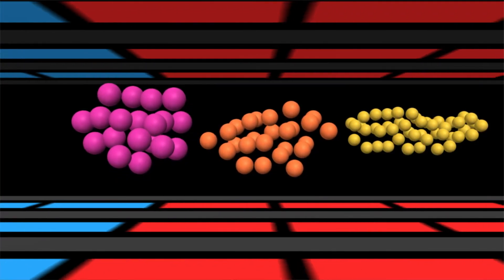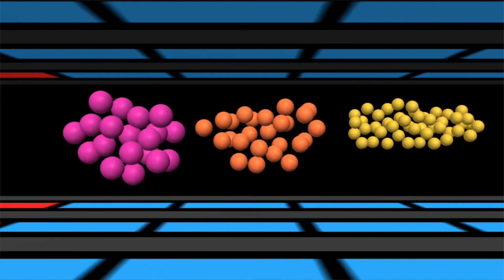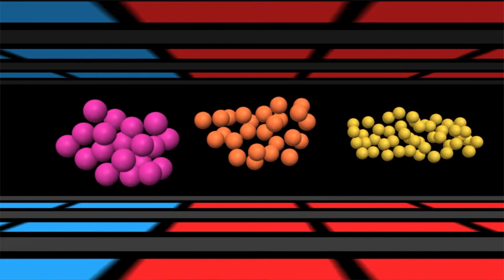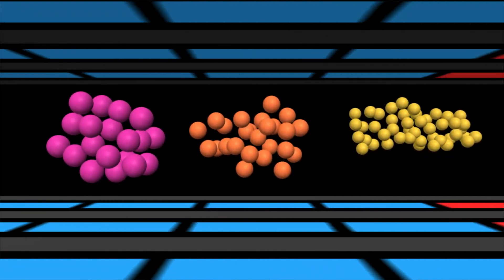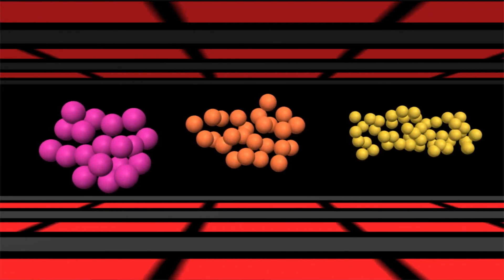To do that, SLIM uses what we call planar geometry. Basically, we have two surfaces and we lay down electrodes on each surface. We apply the appropriate field to those electrodes, and that shapes how the ions move through the system itself.